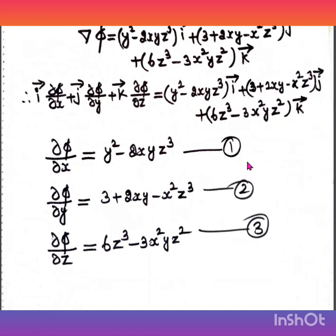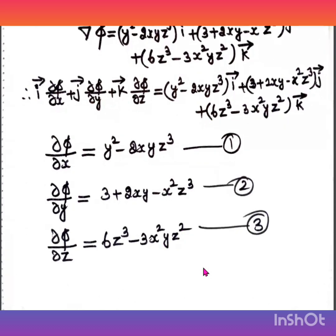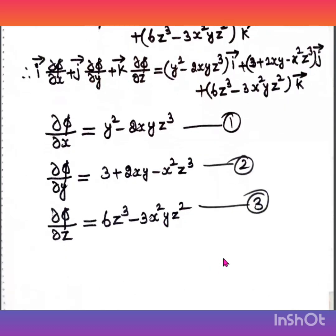Comparing i-vector components: ∂φ/∂x = y squared minus 2xyz cubed. Take this as Equation 1. Comparing j-vector components: ∂φ/∂y = 3 plus 2xy minus x squared z cubed. Take this as Equation 2. Comparing k-vector components: ∂φ/∂z = 6z cubed minus 3x squared y z squared. Take this as Equation 3.